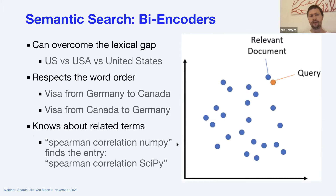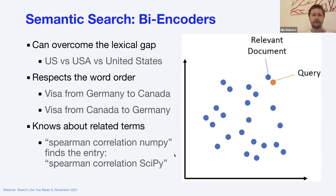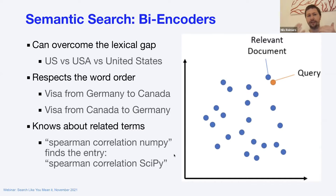The advantage is that it can overcome the lexical gap — 'United States' could be written as US, USA, or many other variations. It can also respect word order, which lexical search cannot. For example, 'how to get a visa from Germany to Canada' versus 'how to get a visa from Canada to Germany' are identical for lexical search — it can't differentiate which direction you want to go. Semantic search, however, can notice the difference between these two.